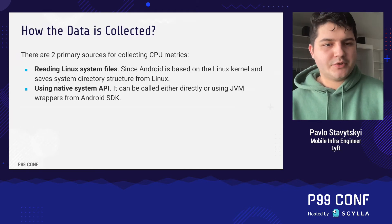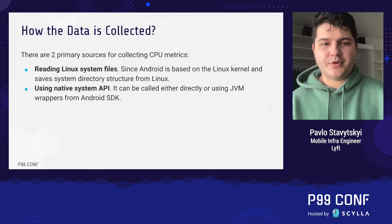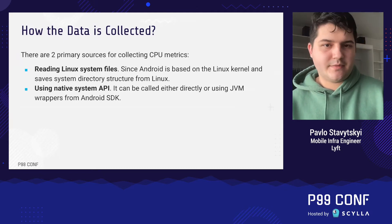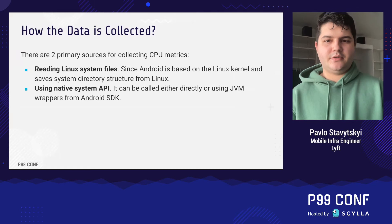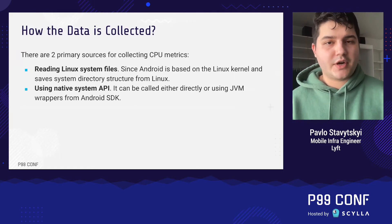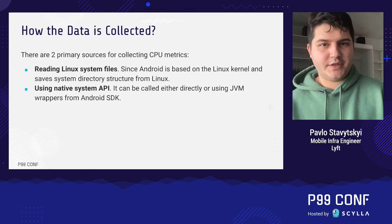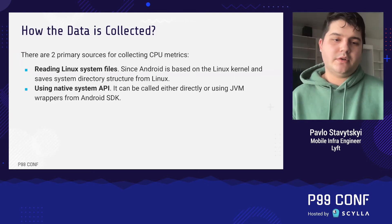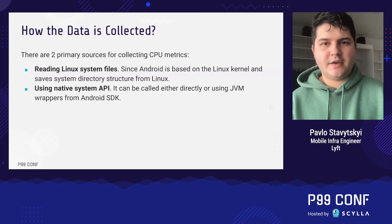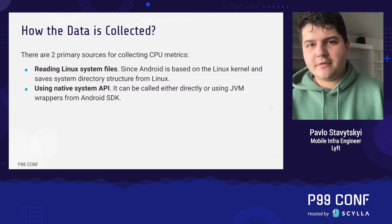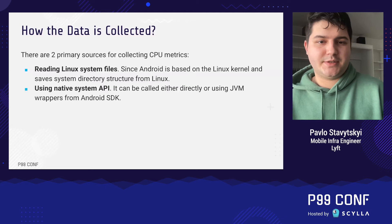To get those metrics we have two primary data sources. First are the Linux system files, because Android is based on the Linux kernel, which means it shares the system directory structure from Linux, and we can benefit by reading the corresponding files for our needs. We can also use native system APIs for other data points provided by the Android SDK, available at the JVM level or at the native C++ level.